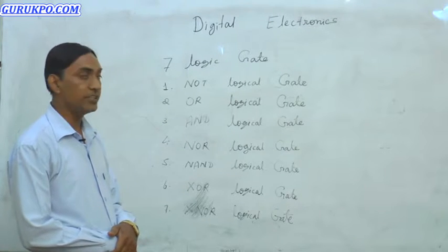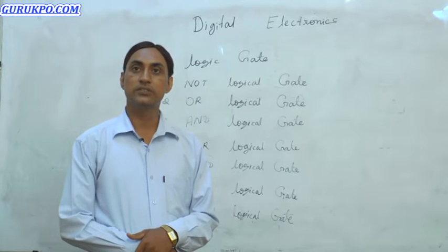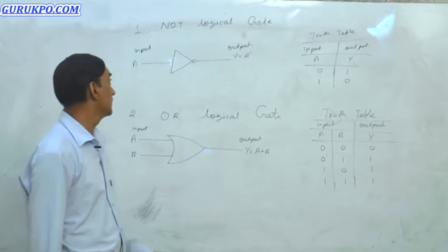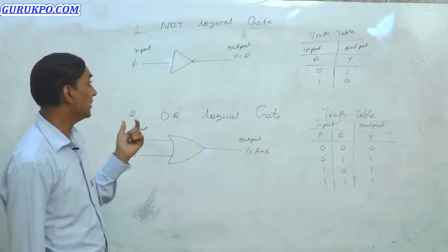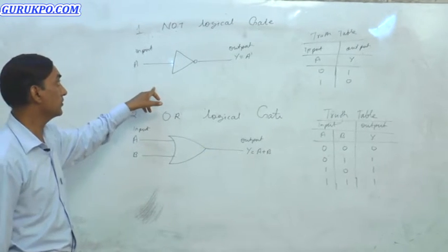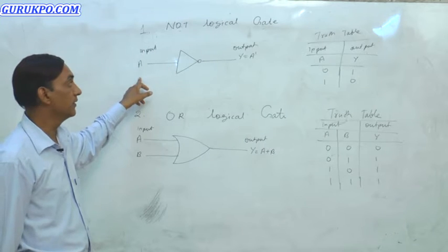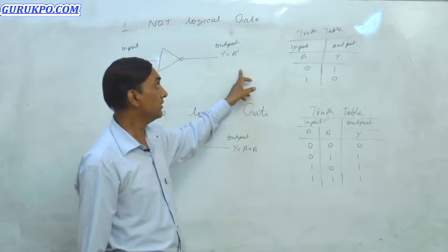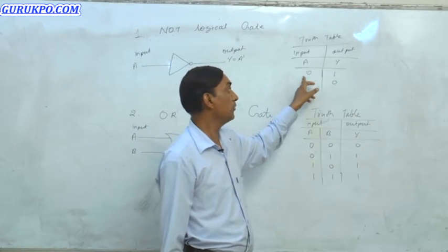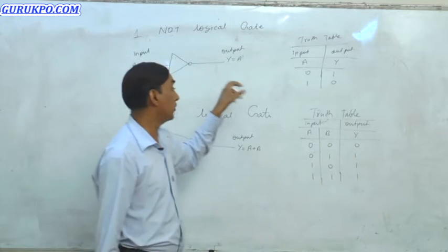Now we will discuss the details and operation of each logical gate — how these logical gates work in electronics, what is the function, what is the role of each logical gate. Our first logic gate is the NOT logic gate. There is a symbol of the NOT logical gate — A is the input and Y is the output. The truth table: if input is 0, then output is 1; if input is 1, then output is 0. This is the function of the NOT logical gate.